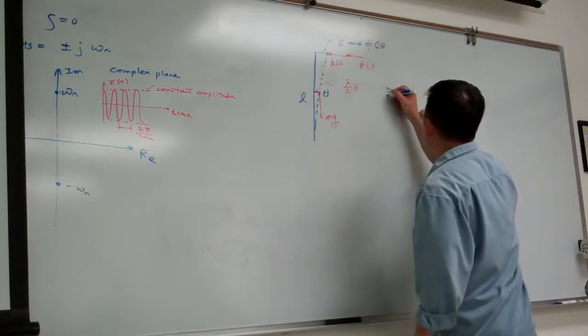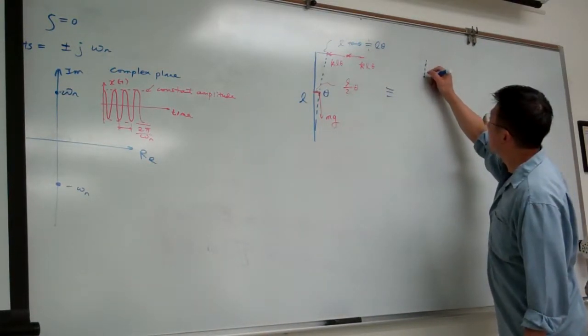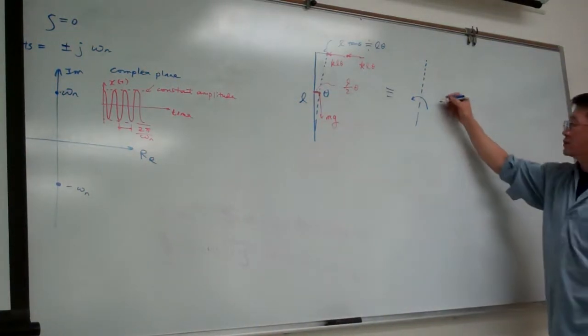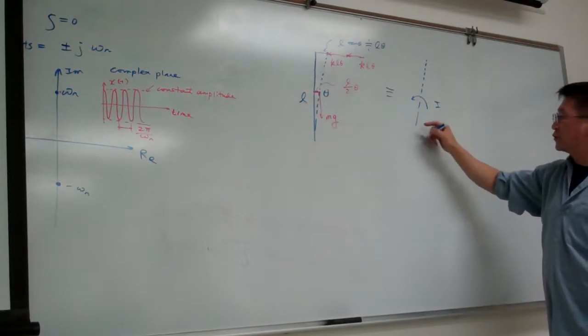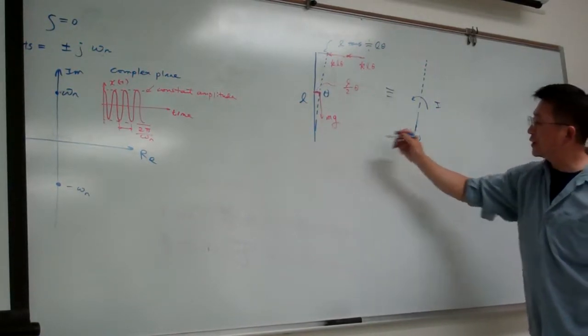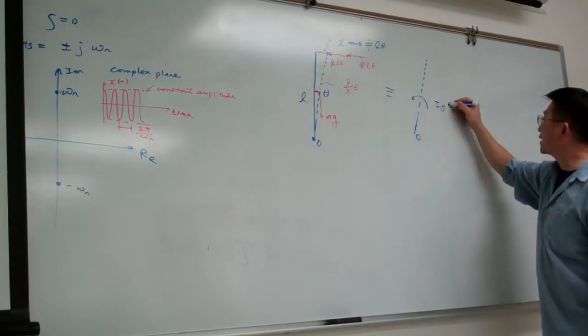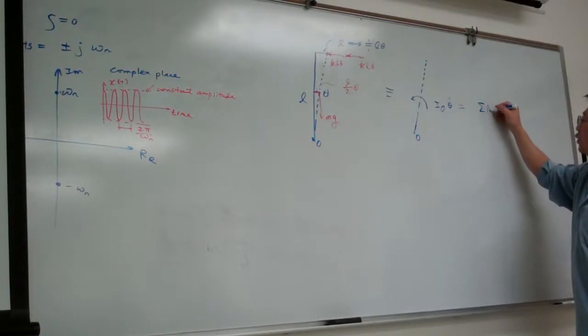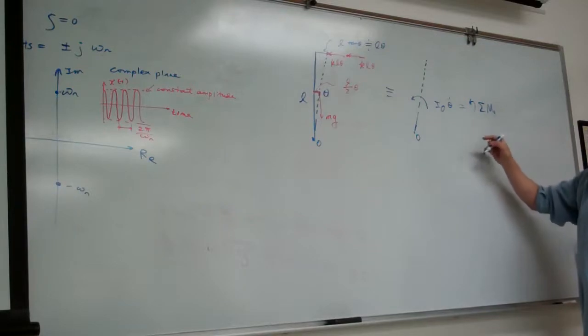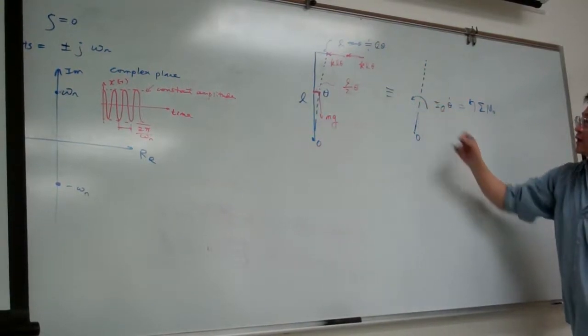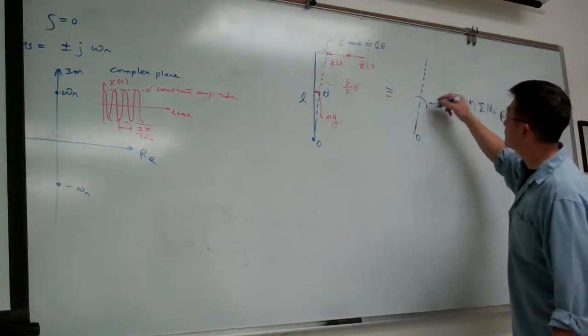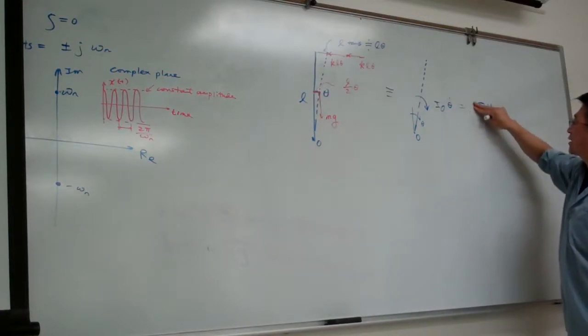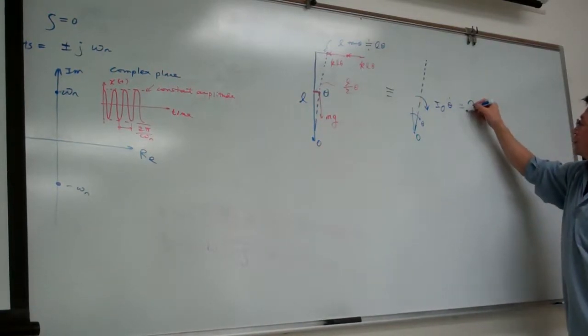Each of the springs is K times L theta. This one will be equivalent to the moment of inertia, I_O, moment of inertia with respect to the pivot point O times theta double dot. Theta double dot will be provided by the moment about O, and let me take the sign convention along with the theta.